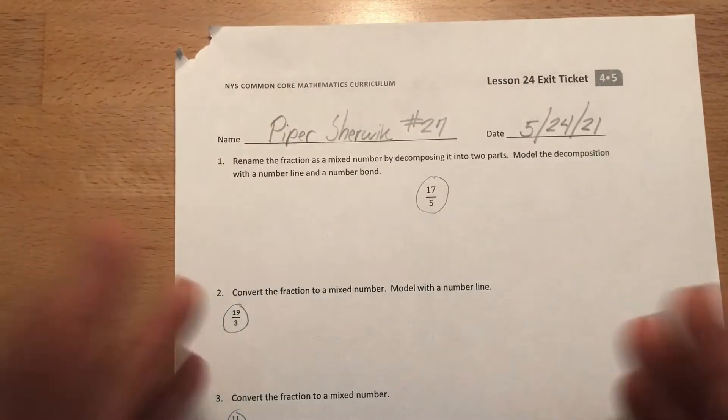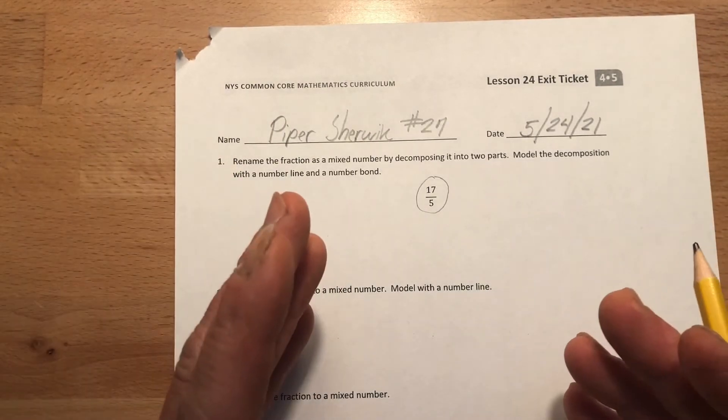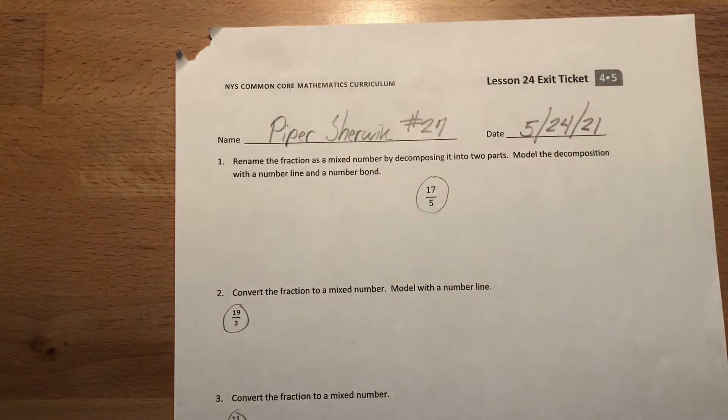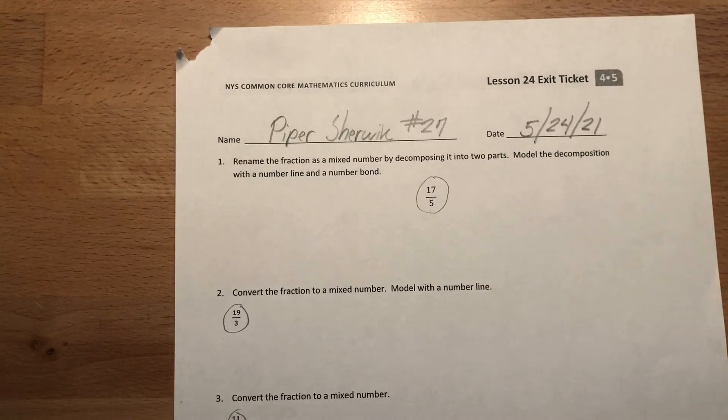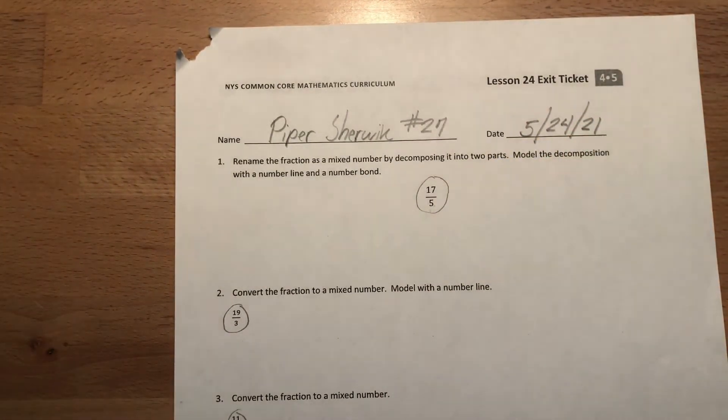So you're going to take them and you can use any method that you want. You can use the decomposition method, right, where we decompose it making a number bond and go from there. Or just do the regular method of how many times does the denominator fit into the numerator. So do what you can to put these into mixed numbers. All right?